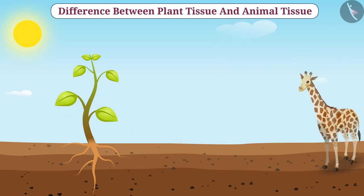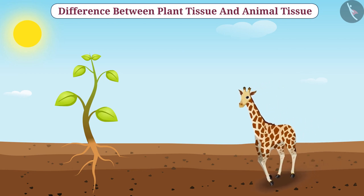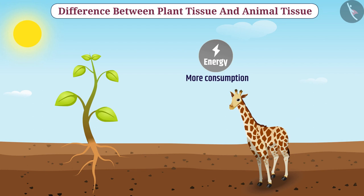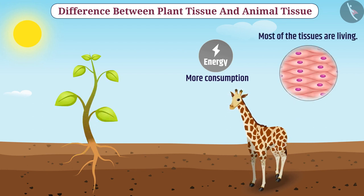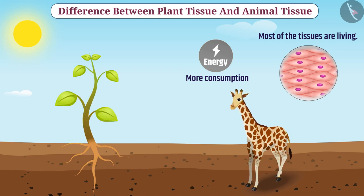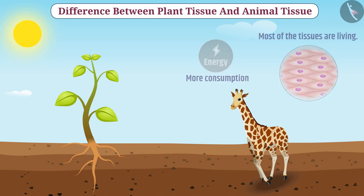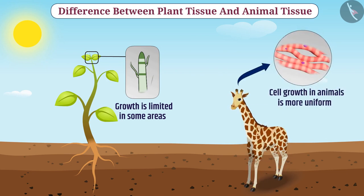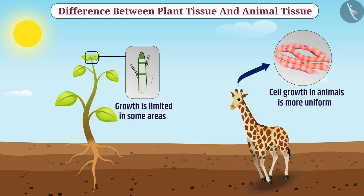In contrast, animals can move from one place to another. That's why animals consume more energy compared to plants. Due to this, most of the tissues of animals are living. Some plant tissues keep dividing throughout their life, so their growth is limited to certain areas, whereas cell growth in animals is more uniform. Therefore, plants and animals have different types of tissues.